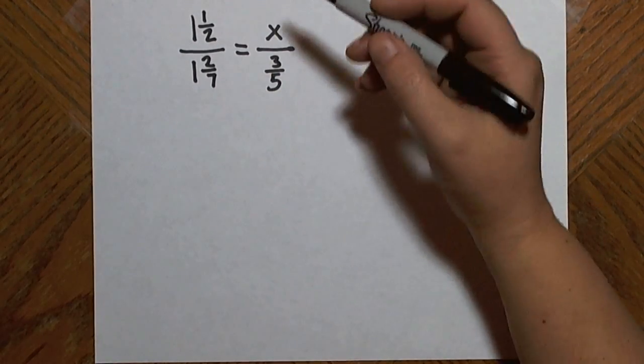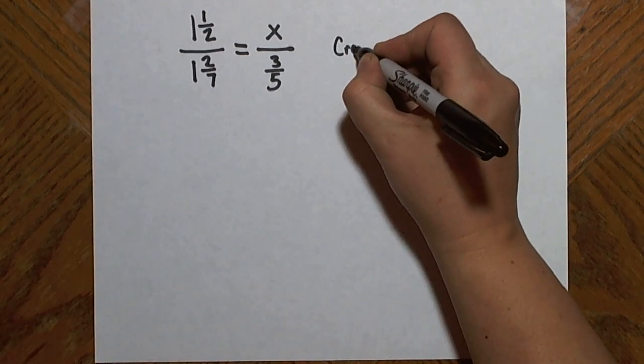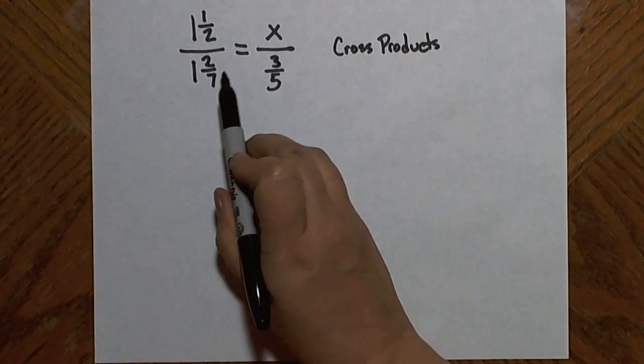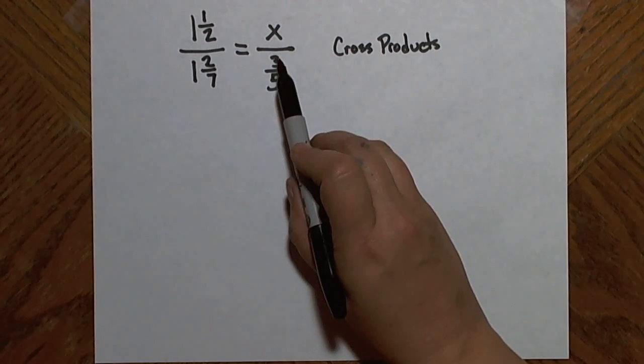In order to do that, I can work with what is called the cross products. Anytime I have two fractions that are equal, it is true that the cross products of those fractions are also equal.